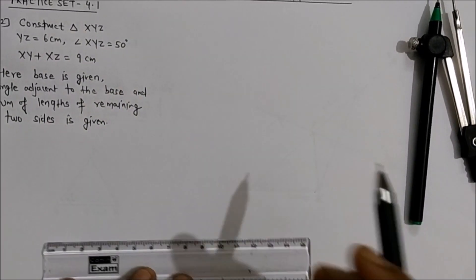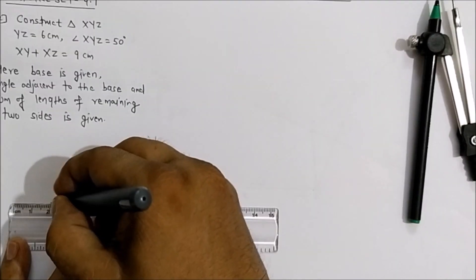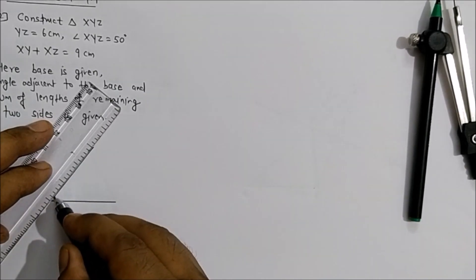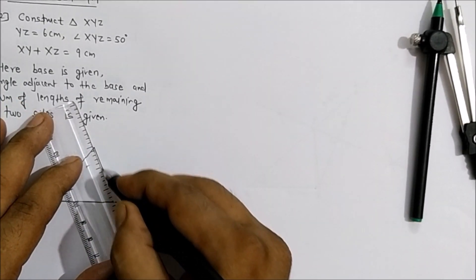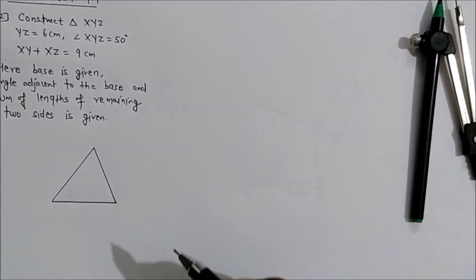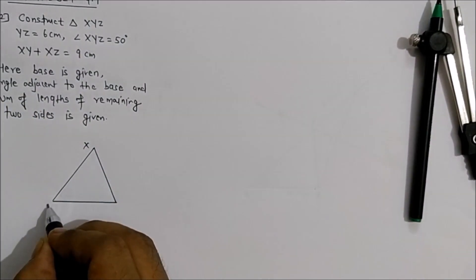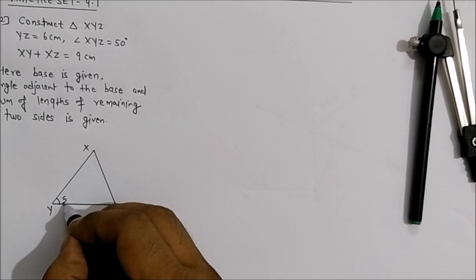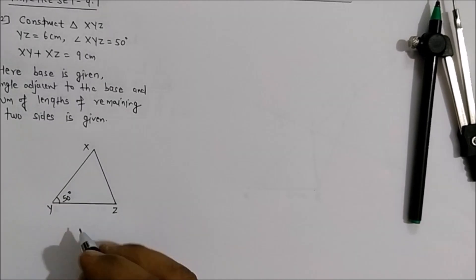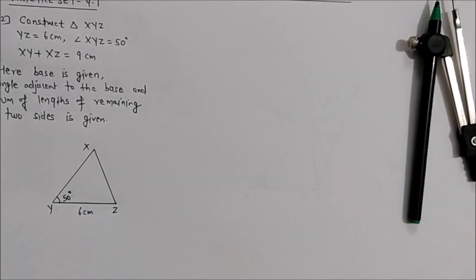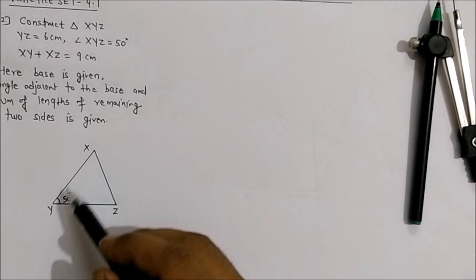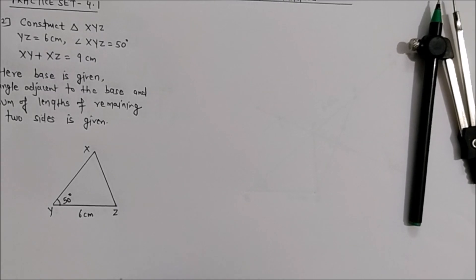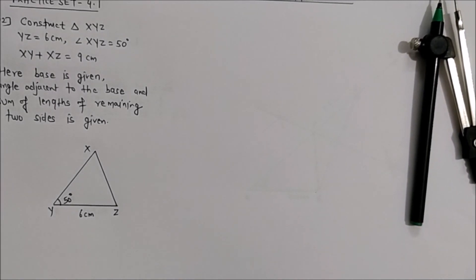First we can draw a rough figure for this information. This is triangle XYZ — the angle is given as 50 degrees and the base is given as 6 cm. The analysis for this question has already been explained. Now let us start with the actual construction.